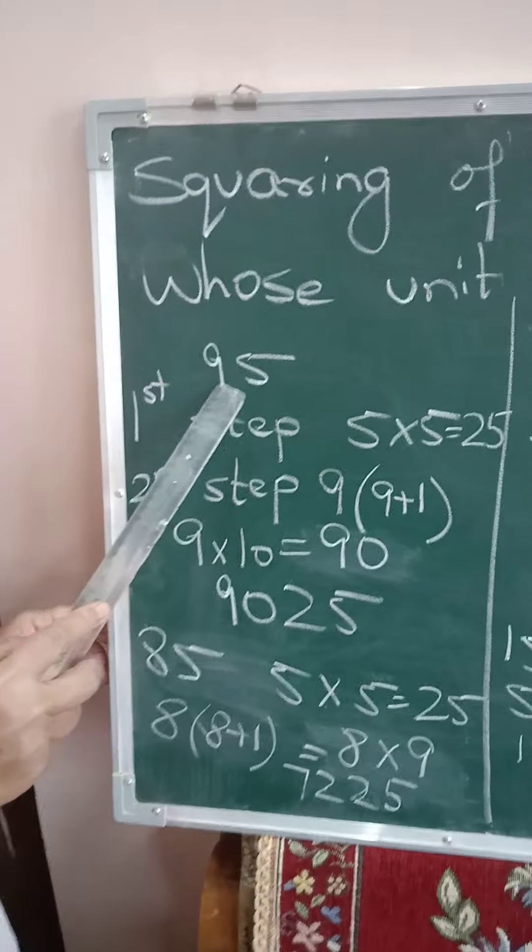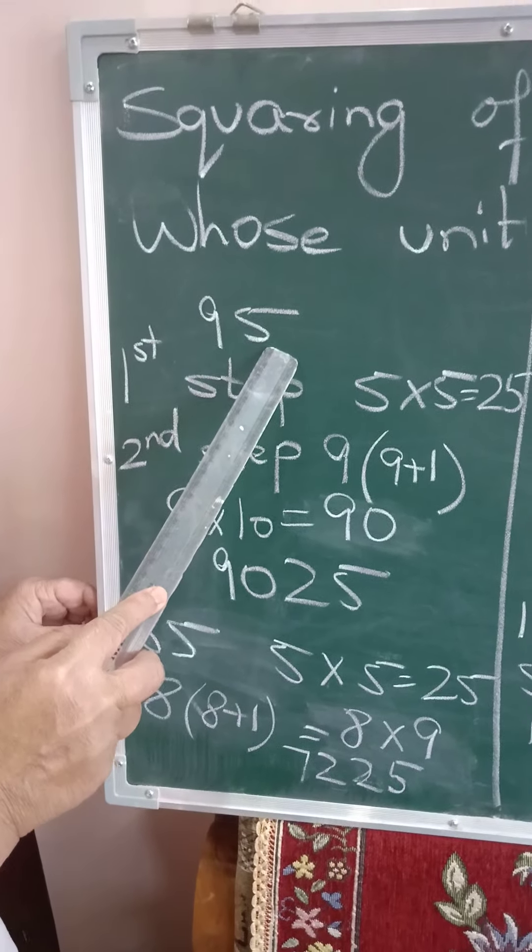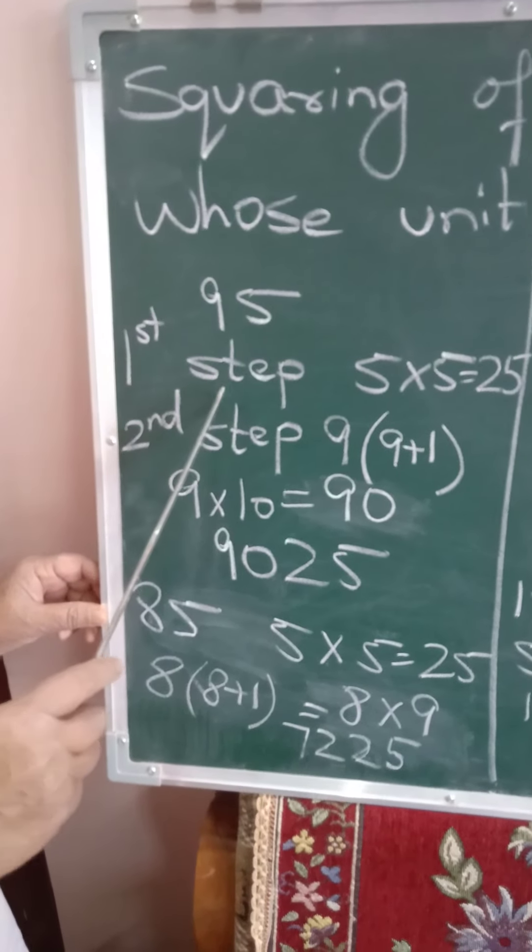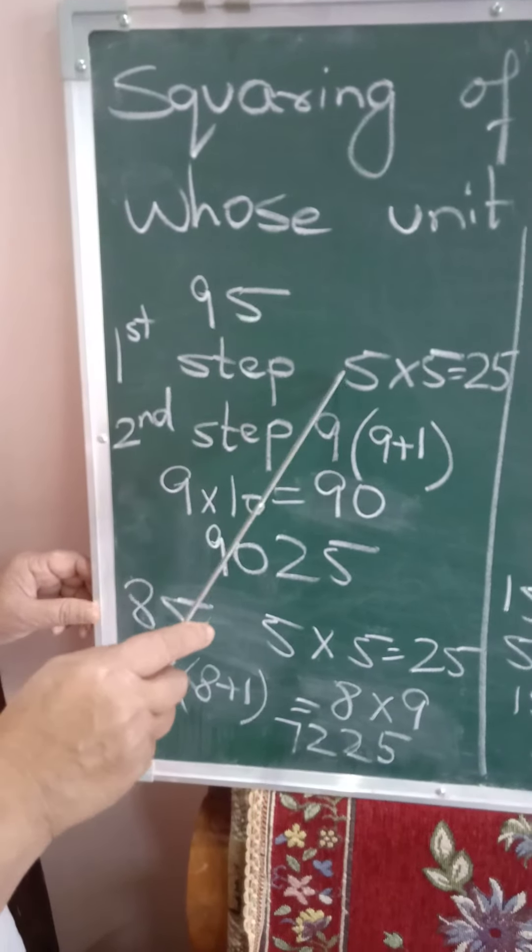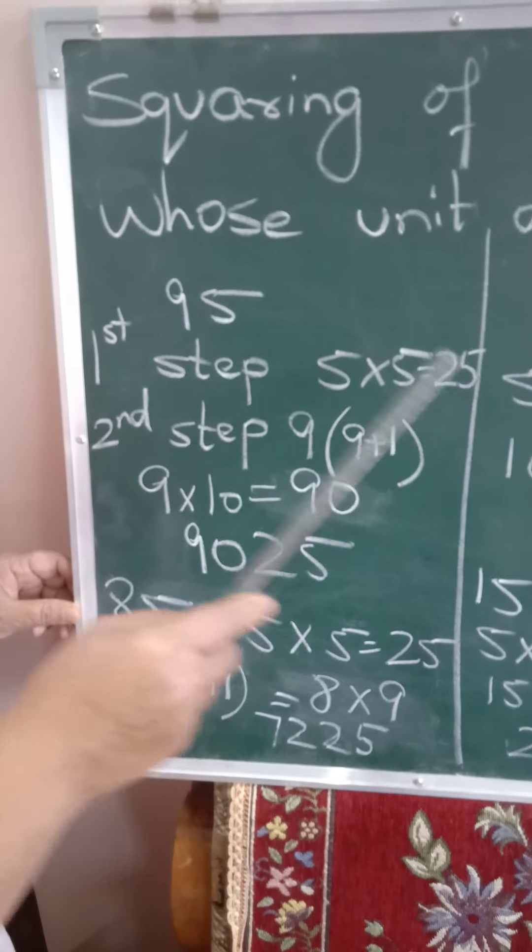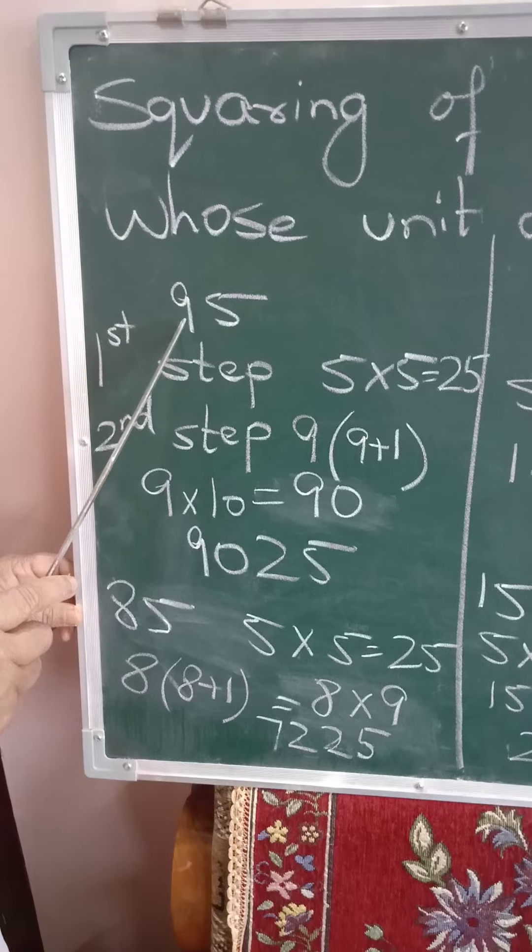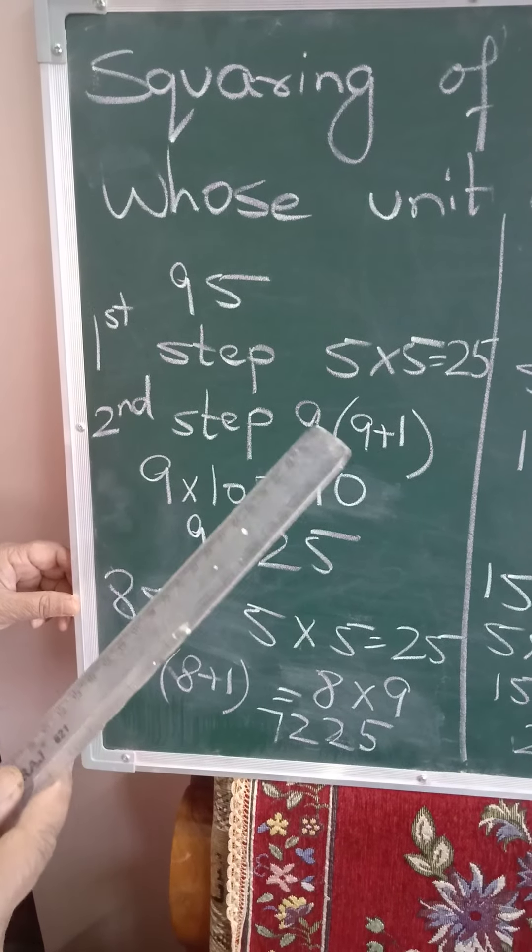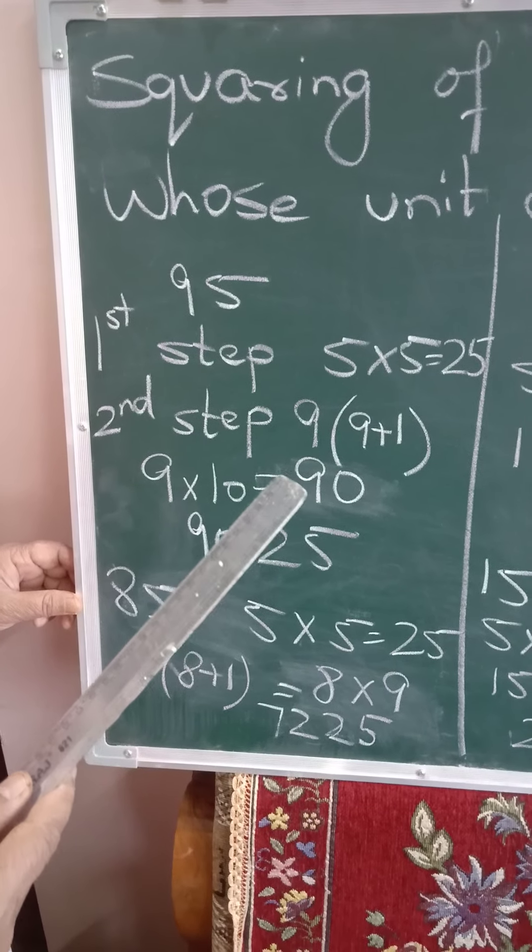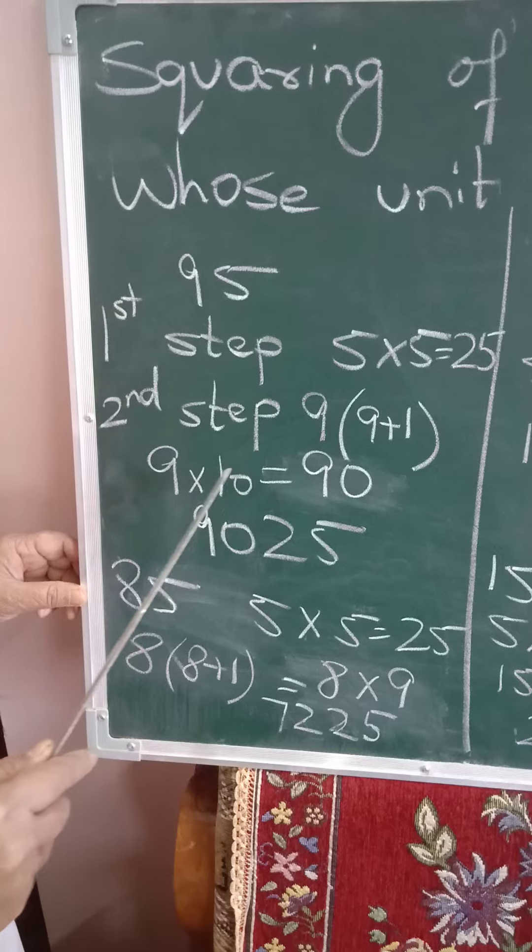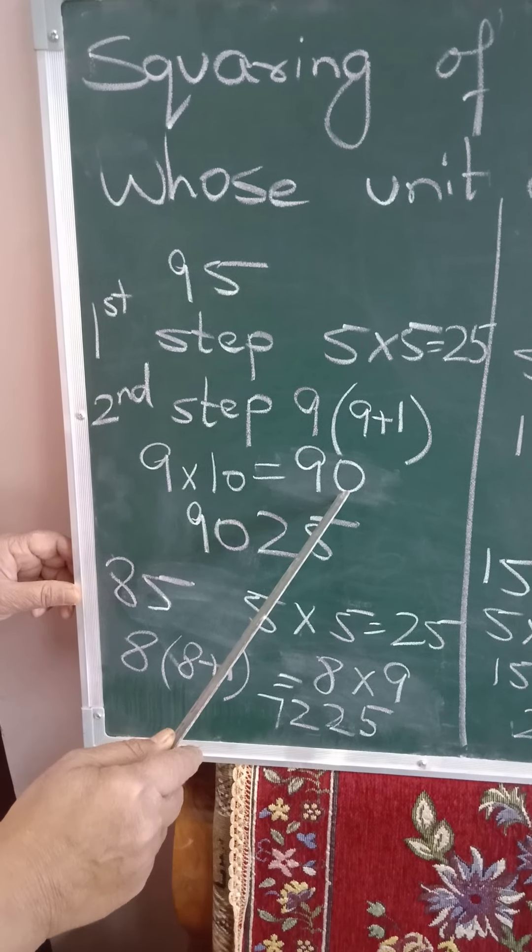Now see here, first number is 95. Here there are only two simple steps. First step, see the last digit, 5. 5 into 5, 25. And then take the first digit, that is 9. Take 9 and just take the next number, or you can say plus 1. So 9 plus 1 is 10 here. So 9 multiplied by 10, 90.